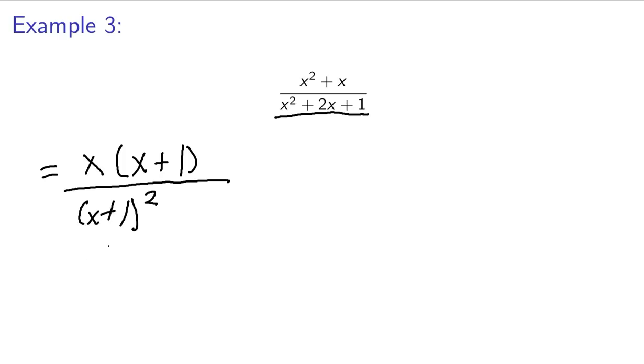Now everything is as factored as it can be. So we go ahead and cancel common factors. And we have 1x plus 1 up here and 2 down here. So we're going to get rid of everything that's common to both. And when we cancel out one of these x plus 1s, we'll still have 1 left.